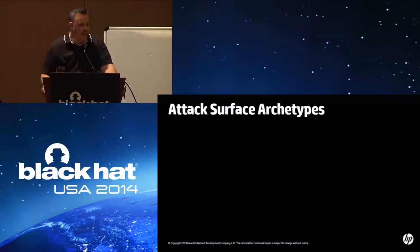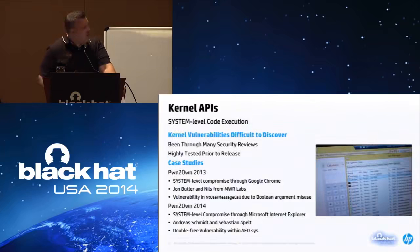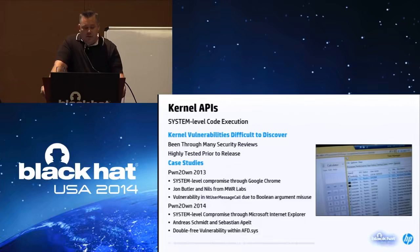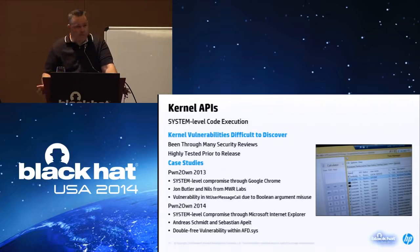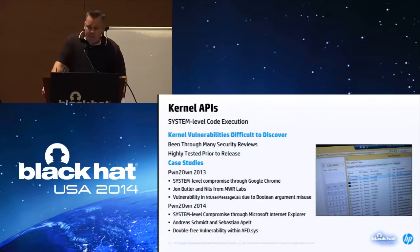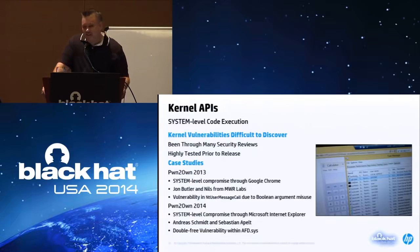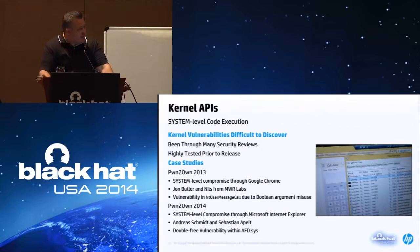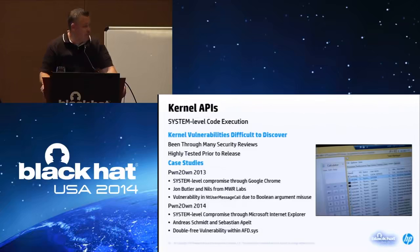Now that you understand how you actually sandbox a process, we're going to look at how you would attack that implementation and what are the most common techniques. First is finding a vulnerability in the kernel — obviously game over. If you have a kernel vulnerability you can get system-level code execution or privilege escalation, which would be much more valuable than medium-level integrity code execution. Kernel vulnerabilities are difficult to discover — that code typically goes through a lot of security reviews and is highly tested prior to release. But at the last two years of Pwn2Own, contestants have brought in system-level privilege escalation bugs as part of their attacks.